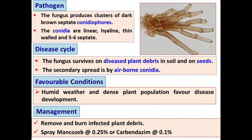For management of Cercospora leaf spot, we have to remove the infected plant debris present inside the field, as it serves as a reservoir host for the pathogen. Diseased or infected plant debris should be removed and destroyed outside the field. Similarly, we can control this disease by foliar spray of Mancozeb or Carbendazim at 2 grams per liter.